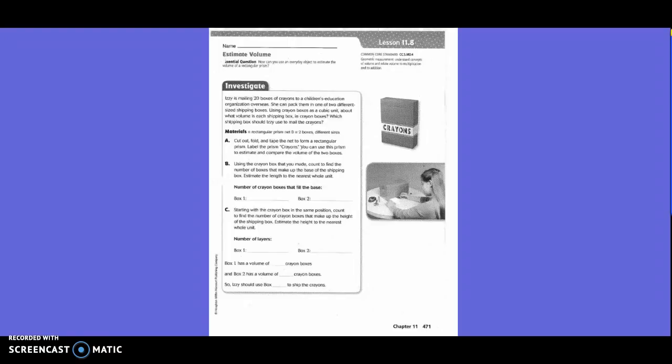Using the crayon box that you made, count to find the number of boxes that make up the base of the shipping box, estimate the length to the nearest whole unit. So number of crayon boxes that fill the base. So this would be our small box or basket. So about how many crayon boxes do we say would fill up our small one? Four. Okay. So four boxes.